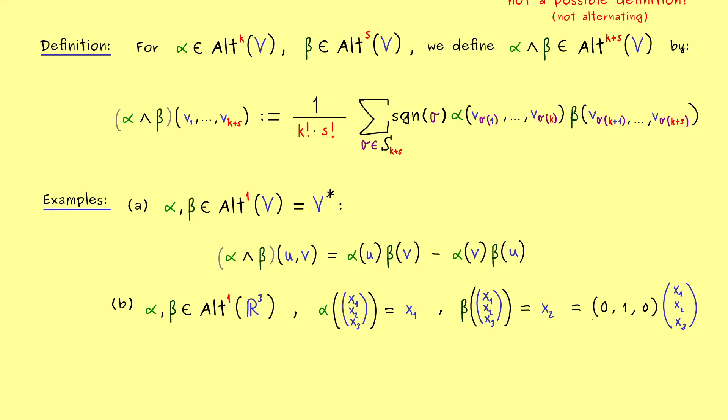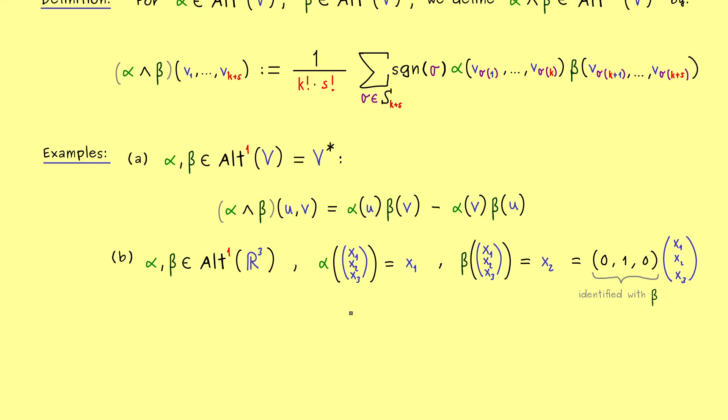And if you see it like that, you could say that beta is actually given by this row vector. So in that sense, giving an alternating 1-form is the same as giving a row vector here.